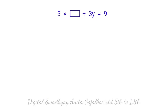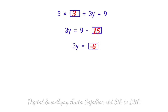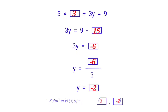5 into 3 plus 3y equal to 9, so 3y equal to 9 minus 15, giving 3y equal to minus 6. Therefore y equal to minus 6 divided by 3, so y equal to minus 2. The solution is (x, y) equal to (3, minus 2).